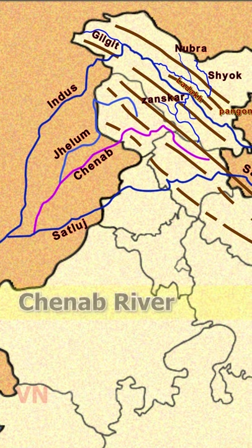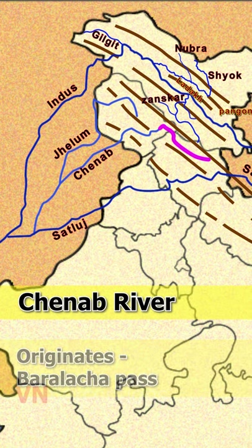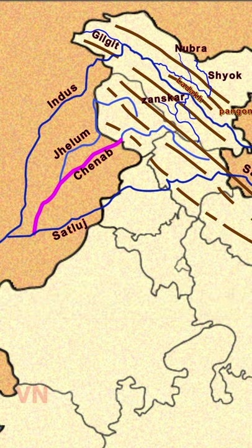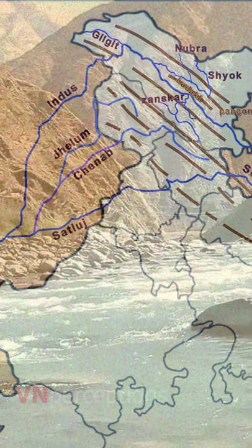River Chenab is the largest tributary of Indus. It originates near the Baralacha Pass in the Lahul-Spiti part of Jhanskar. It flows through Jammu and Kashmir into the plains of Punjab, then Pakistan, before flowing into the Indus.